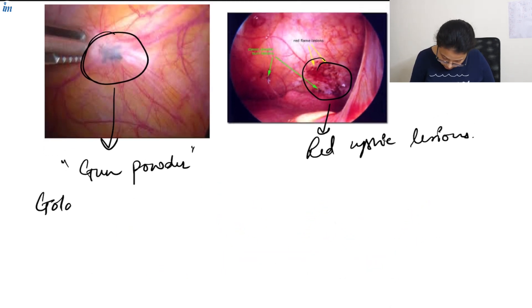Now the gold standard for investigation is histopathological examination and in endometriosis we have very high levels of CA-125.